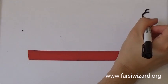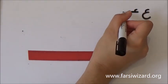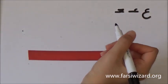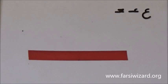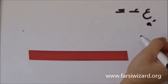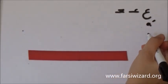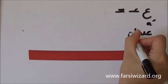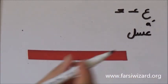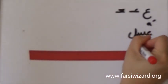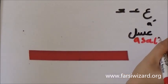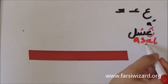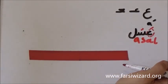We're going to get started with EIN and you will see how this letter appears in words and how its form changes according to where in the word it's going to be. The sound is kind of like A — it's like a glottal stop, but it's not as strong as it is in Arabic. So please do not pronounce it as the Arabic A, because this is Persian, not Arabic. It's simply just a regular A. Here we have the word ASAL, which means honey.